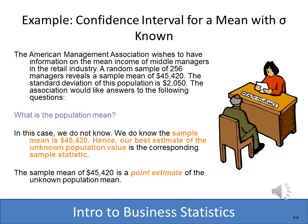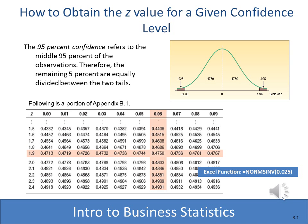Here's an example using the confidence interval. The American Management Association did a random sample of 256 managers and found a sample mean of $45,420. The population standard deviation is known to be $2,050. We use the sample mean of $45,420 as a point estimate, and want to know the range within which 95% of the managers would lie. The z-score of 0.475 is 1.96. In Excel, the NORMSINV function with 2.5% also returns 1.96.